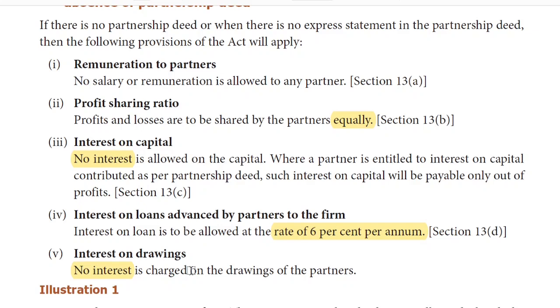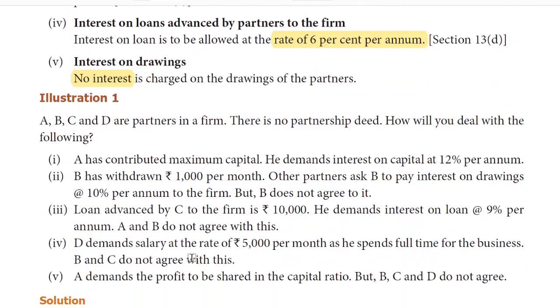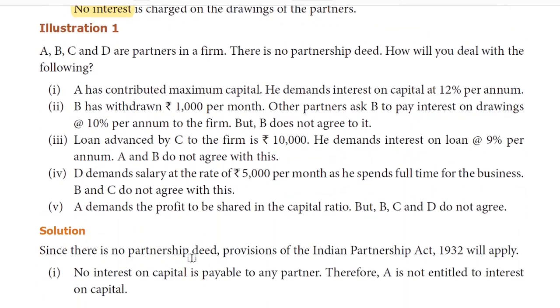So, in summary, the five provisions of the Indian Partnership Act 1932 are: remuneration to partners, profit sharing ratio, interest on capital, interest on loans advanced by partners to the firm, and interest on drawings. Now, let's see the illustration. A, B, C and D are partners in a firm. There is no partnership deed.